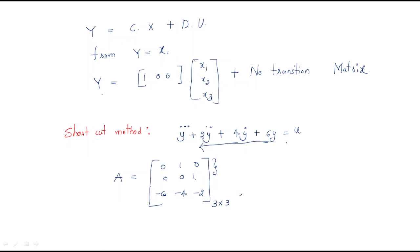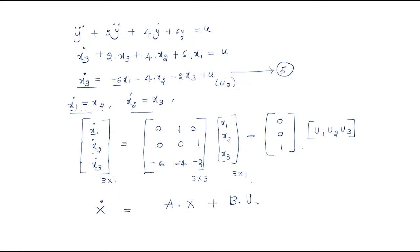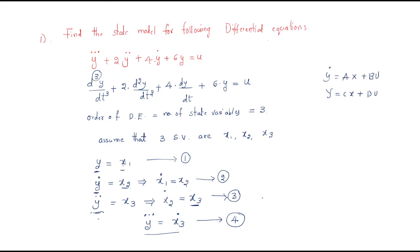For matrix B, since y = x1 directly, B is [0; 0; 1] — a 3×1 matrix. For matrix C, it is the transpose of B reversed: C = [1, 0, 0] — a 1×3 matrix. Using this shortcut, we directly obtain state matrices A, B, and C from any given differential equation. I hope all of you understood the session. Thank you.